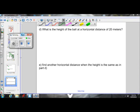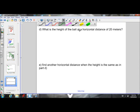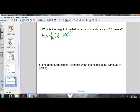So part D, what is the height of the ball at a horizontal distance of 20 meters? In order to do this question, we need our original equation, which is h equals negative 1 over 16, d minus 28, d minus 28 squared, plus 49.